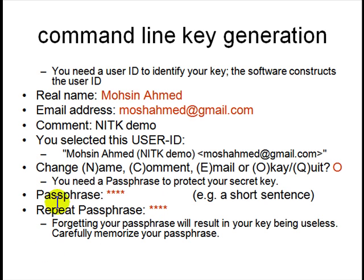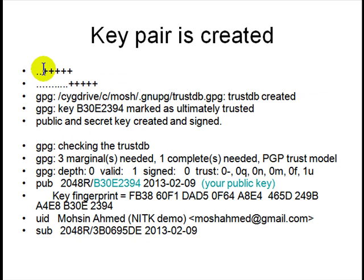If you forget the passphrase, all your keys — the ones that are locked with it — are lost. So don't forget it, or make a copy of it and the key pair and keep it in a safe place, offline. When generating, GPG prints dots and plus signs, which basically means it is collecting random data — entropy from the machine, like network delays, USB ports, CPU temperature — things that are hard to predict.